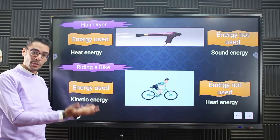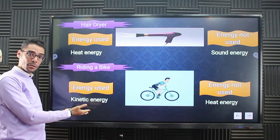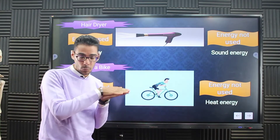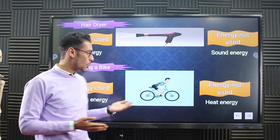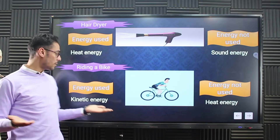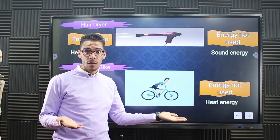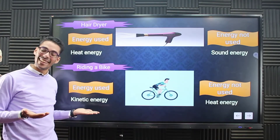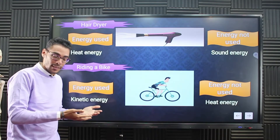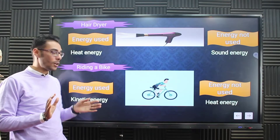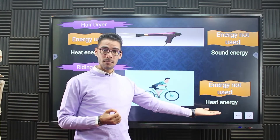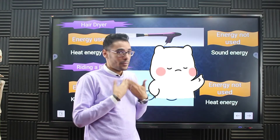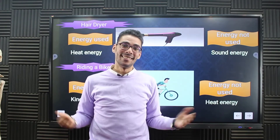Another example is riding a bike. When riding a bike, two forms of energy are produced: kinetic energy from the spinning of the wheels, and heat energy from the friction between the tires and the ground. But which one is useful? Simply, it is the kinetic energy — we ride a bike to move. So kinetic energy is both produced and useful. The heat is produced, but we do not need it, so it is not used energy.